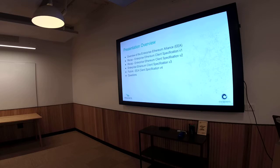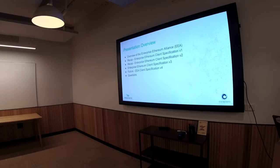As an overview of what we're going to cover today: first, I'd like to give you an overview of the Enterprise Ethereum Alliance, or the EEA, and then give you a recap of what has happened before. Because this is Version 3, we want to cover what happened in Version 1 and Version 2. Then I'll hand over to Robert, who will give you an overview of what's new in Version 3, as well as a look into what we're planning for Version 4. And finally, we'll finish off with questions. Feel free to ask questions along the way, and we'll try to make this as interactive as possible.